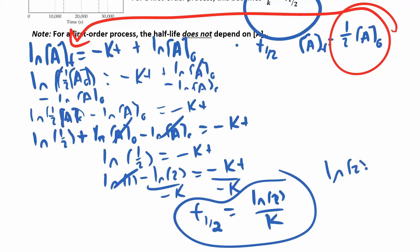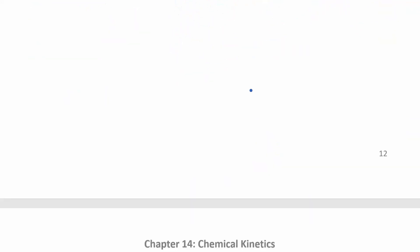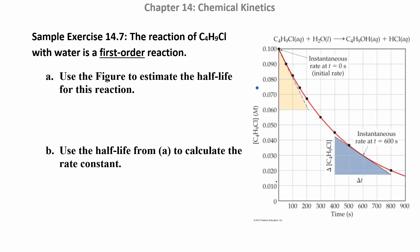ln(2) is just a constant — it's 0.693. You can remember that value or just remember ln(2). That's for first order. You can derive similar half-life equations for zero and second order by following the same process and plugging into a different integrated rate law equation.